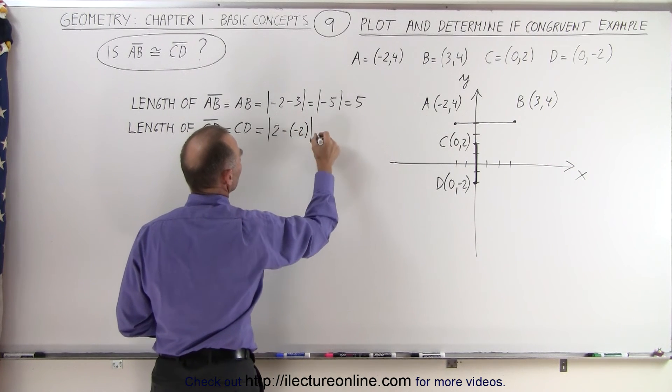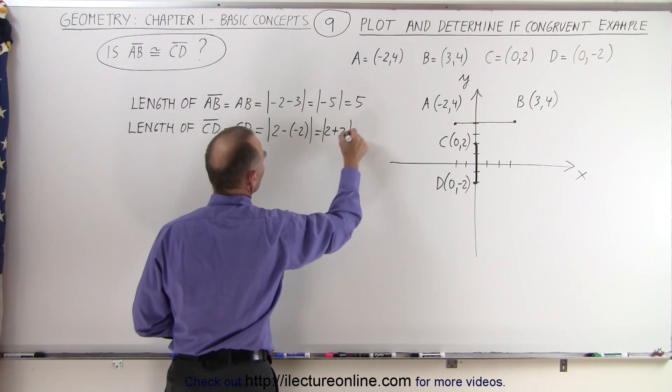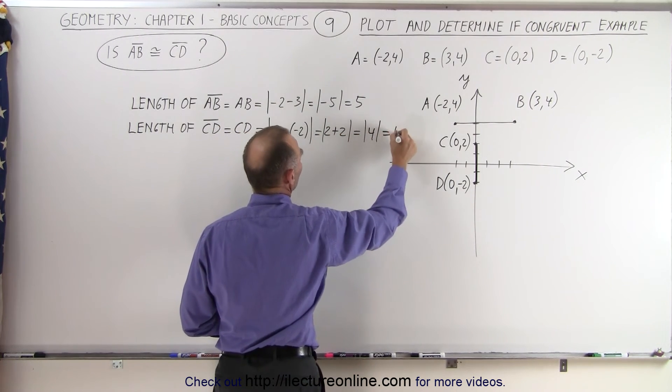We take the absolute value, so this is 2 plus 2, absolute value, which is the absolute value of 4, which is 4.